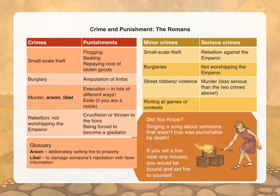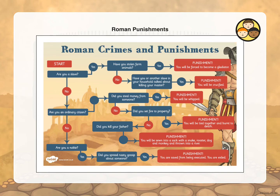Some of the punishments you've seen might seem fair, and some will surely shock you. Here's a fun way of looking at what would happen to you in Roman times — a flowchart. For example: Am I a slave? No. Am I an ordinary citizen? Yes — blue circle. Did I steal money from someone? Yes. Punishment: I will be whipped. Have a play with the flowchart and see what punishments you would have received.